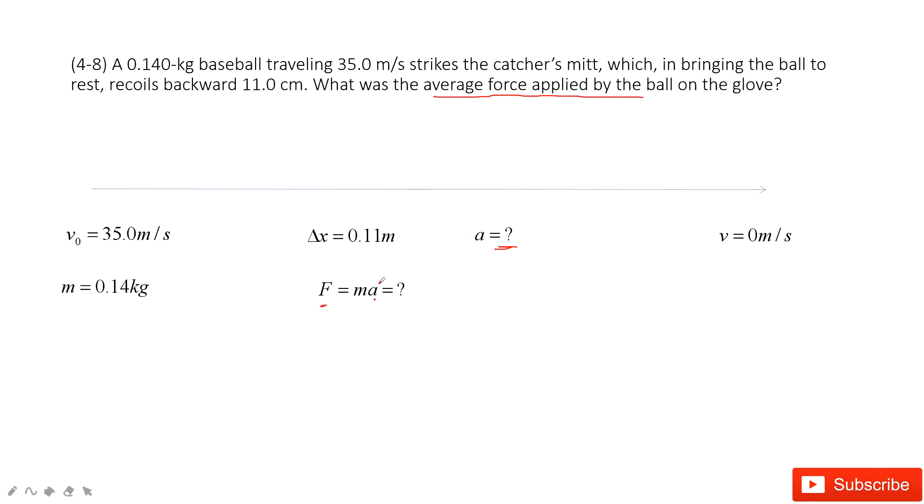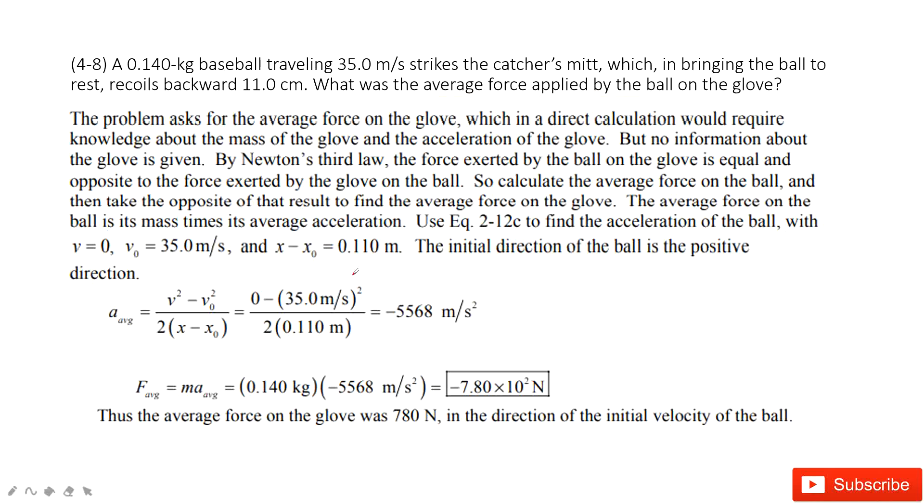Input acceleration into Newton's second law, and we can get the net force. In the first step, we need to find acceleration of this baseball, and we must keep the negative sign there. The negative sign tells us the direction for this change of acceleration. Then input the acceleration in Newton's second law, we get the force of the baseball on the glove.